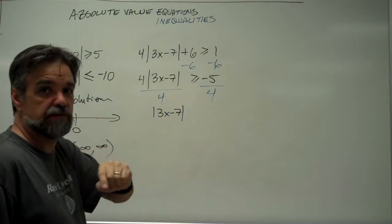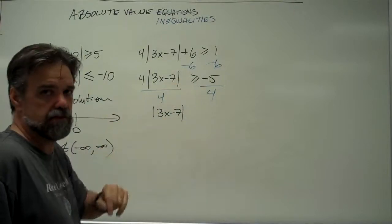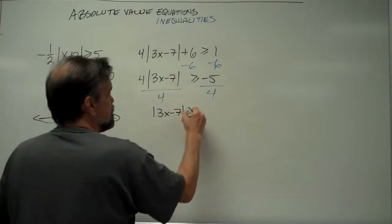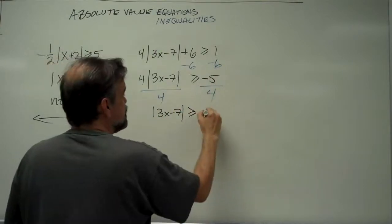It's only when you divide by a negative number, or multiply times a negative number, then you change the direction of the inequality. Otherwise, don't mess with it. So, that's still greater than or equal to negative 5 divided by 4. I'll write this as negative 1.25.